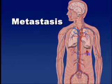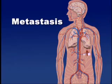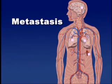Cancers that originate in the breast or colon, for example, typically metastasize to the brain, lung, liver, or bone, forming new tumors there. Metastasis can be a slow process, occurring over a number of years, or can happen rapidly within a few weeks. Scientists are not sure why.